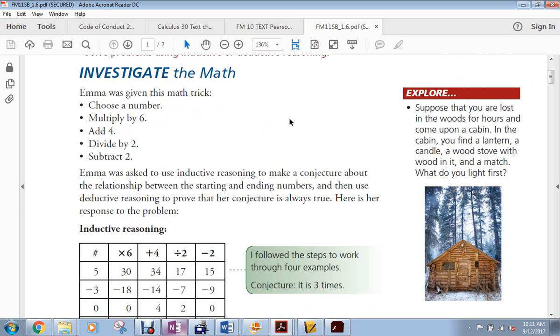So let's get to this investigate here. Now, and this is going to be a short lesson today. Emma was given this math trick, and she was asked to use inductive reasoning to make a conjecture about the relationship between the starting and ending numbers. And then use deductive reasoning to prove that her conjecture is always true. So you can use both types of reasoning to come up with some kind of idea about how this is true. One would be a conjecture that could be a pretty strong idea about what the relationship is. And the other would be more of a formal, here I'm proving it, right?